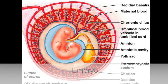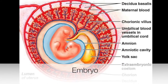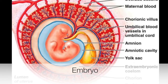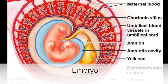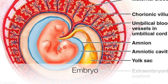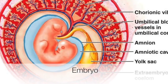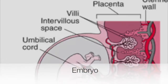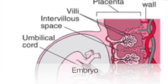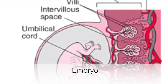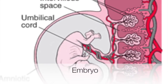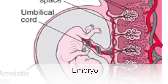As the embryo develops, membranes form to nourish it and keep it safe. One membrane, the amnion, fills with fluid and is called the amniotic sac. This sac cushions the embryo and protects it from sudden changes in temperature. Another membrane, the chorion, also forms to nourish the embryo as it develops.